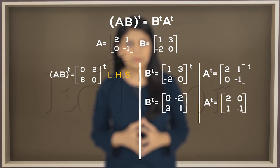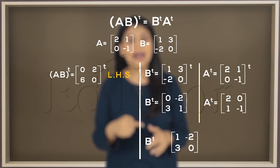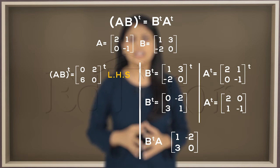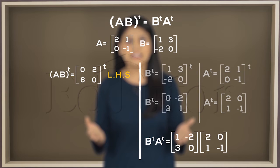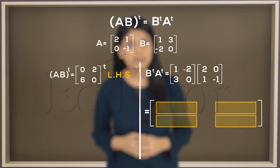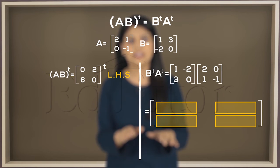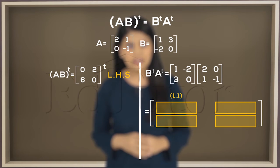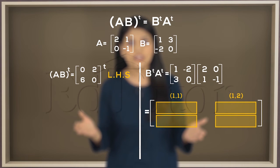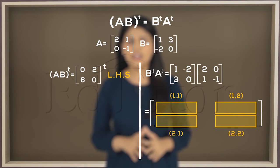Now we need to multiply them. The transpose of B at the left and then the transpose of A is at the right. We have to fill 4 positions in our final matrix: position 1 1, position 1 2, position 2 1 and 2 2.